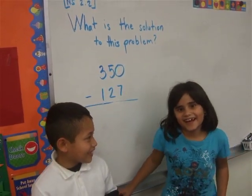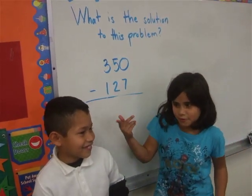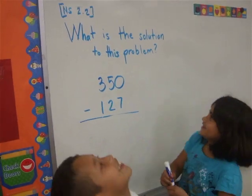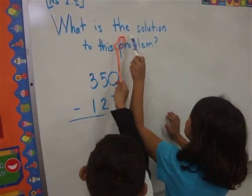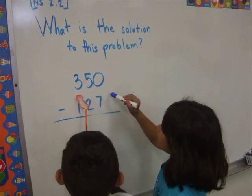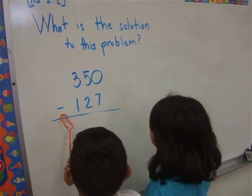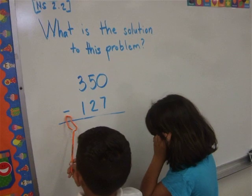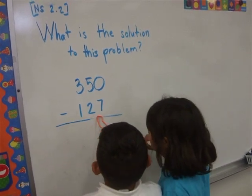I'm Mariana and this is my coach. What is the solution to this problem? Three hundred fifty minus one hundred twenty seven.